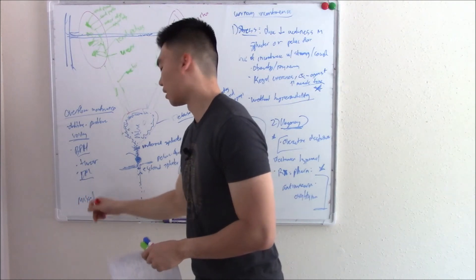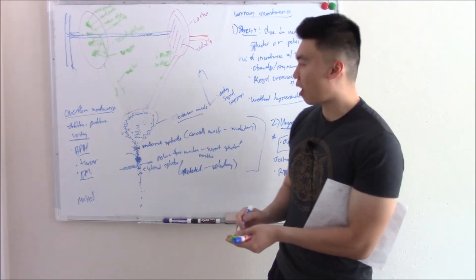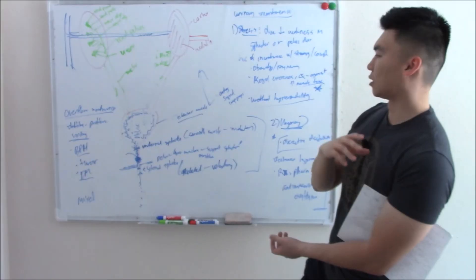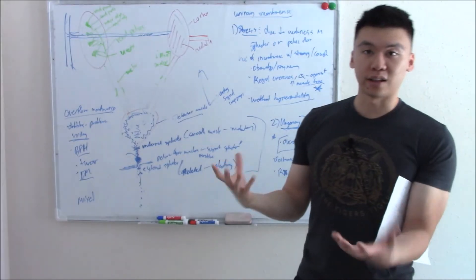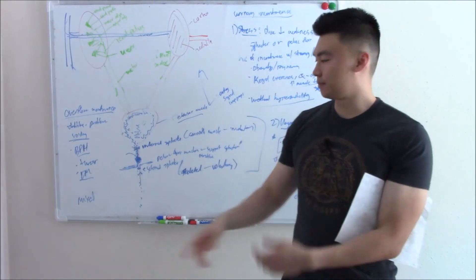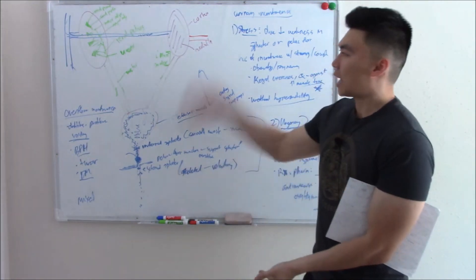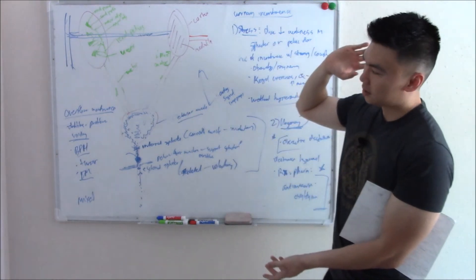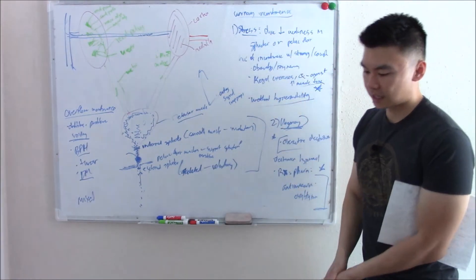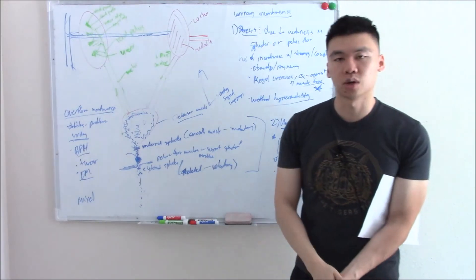Last is mixed incontinence, which has features from all the other types — not everything fits into a neat box. That covers the general anatomy of the kidneys; the next video will cover embryology.